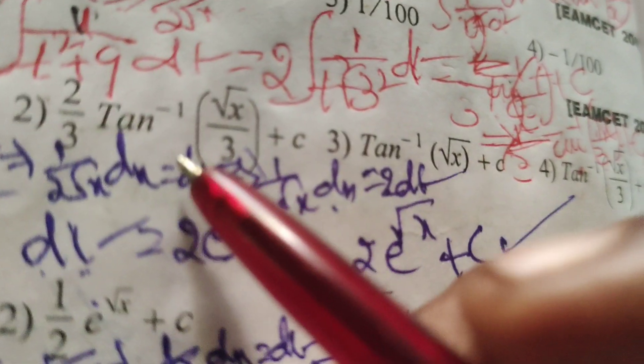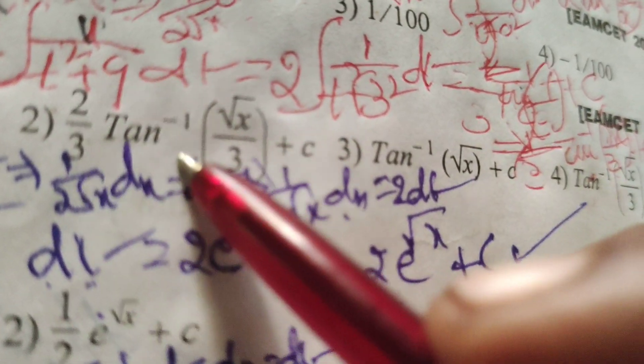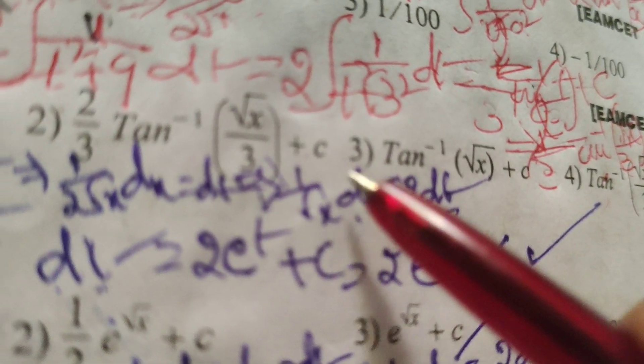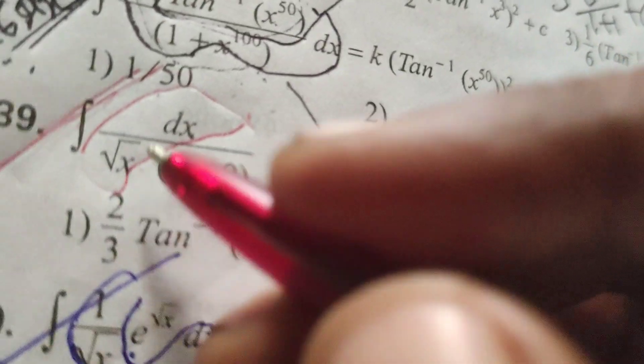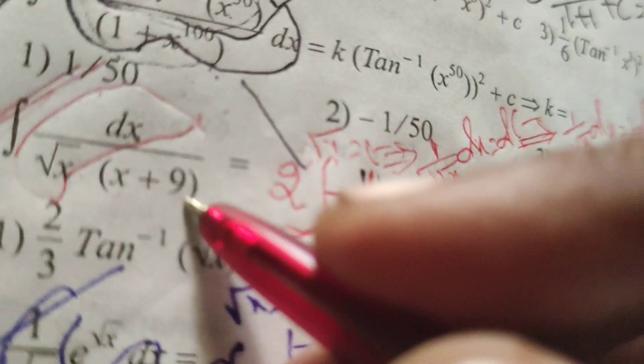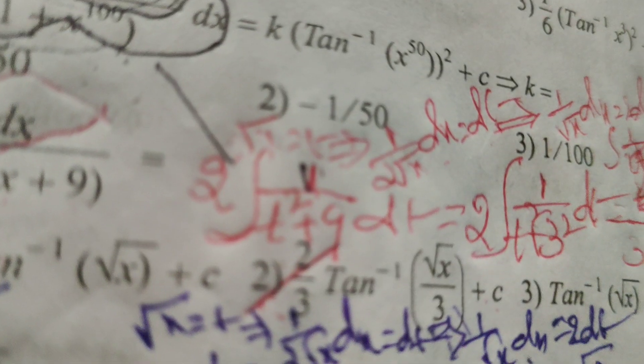So 2 by 3 tan inverse of root x by 3 plus c is our solution to this evaluated integral problem: integral of 1 by root x into x plus 9 into dx. Thank you.